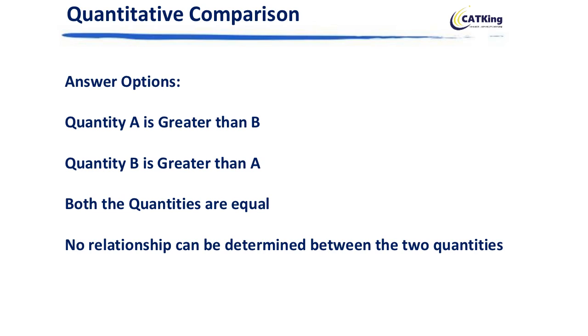Remember, this option that the two are not related usually does not happen when you have both of the entities being numericals, because some or the other equation, whatever you solve, you would either get an answer of them to be equal or greater or less than. That's a very basic thing which you need to keep in mind.